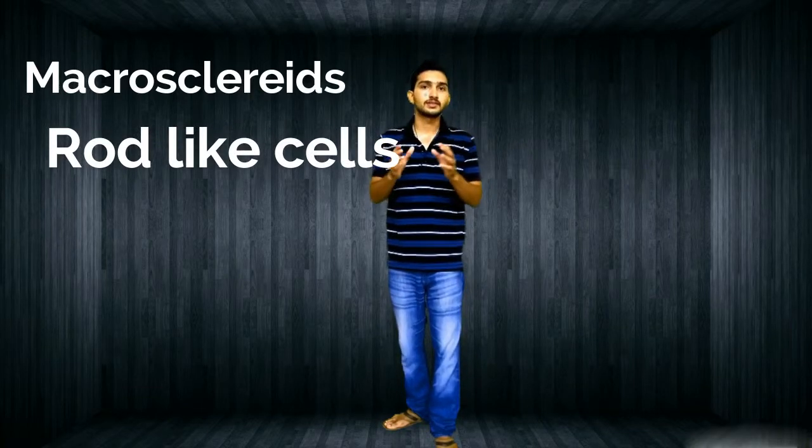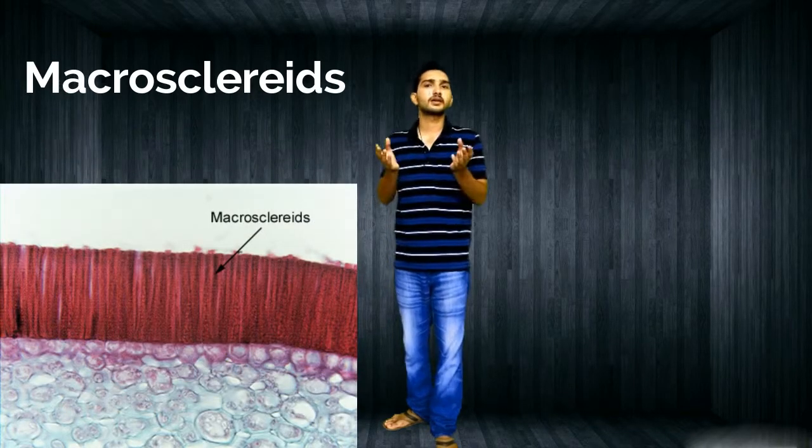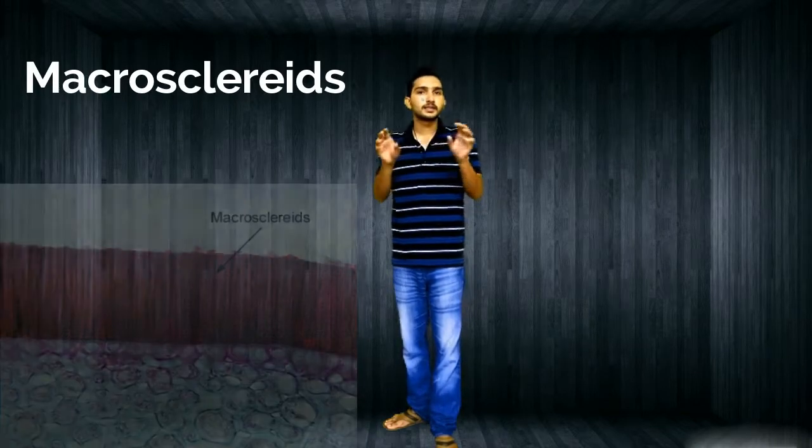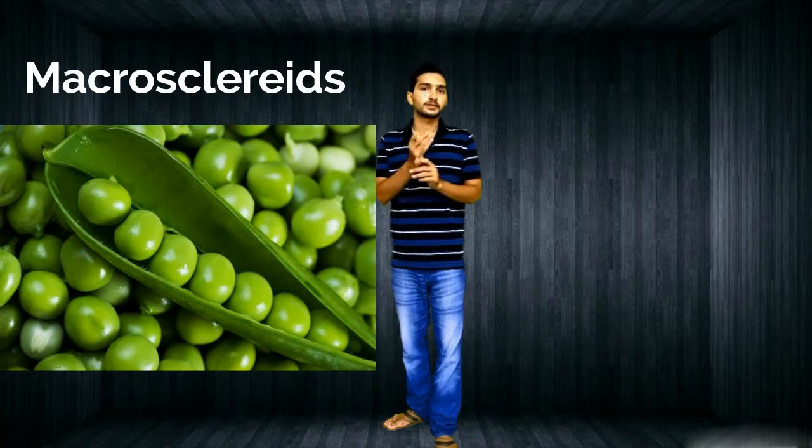Now let's talk about macrosclerids. The name itself tells us they are rod-like cells. These are columnar and arranged like rod-like cells. Examples include leguminous seeds such as Phaseolus and Pisum.